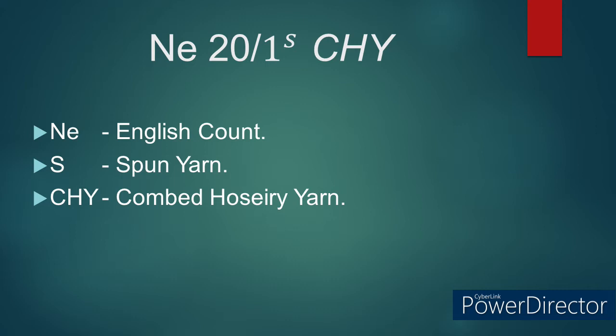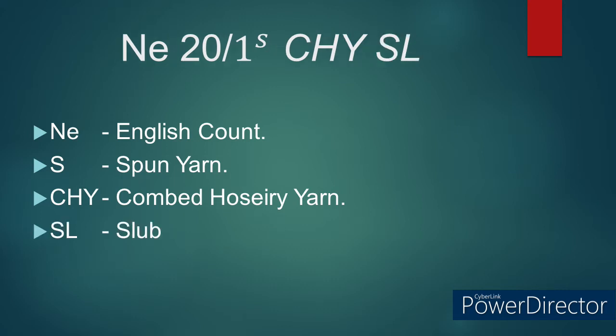Number 2: NE 20/1S CHY SL. Here NE refers to English count. S refers to spun yarn. CHY refers to combed hosiery yarn. SL refers to slub yarn, meaning the yarn has slub in it.